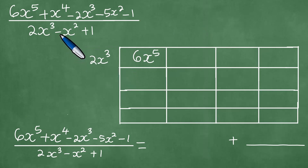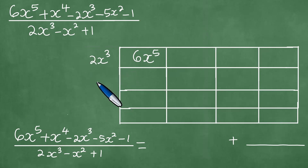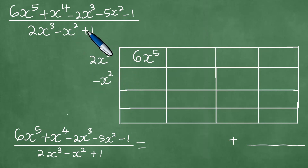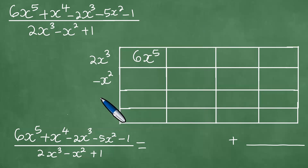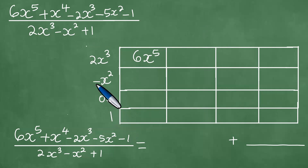We must have all the terms in descending power of x from x cubed until we reach the constant. So we have 2x cubed, then minus x squared. After x squared, we need an x term, but there's no x term — it's x squared then 1, no x term. So we put 0x, because there's no x term like 2x or 3x. Then we drop the 1, which is the constant term of the divisor. The denominator is called the divisor of this rational expression.